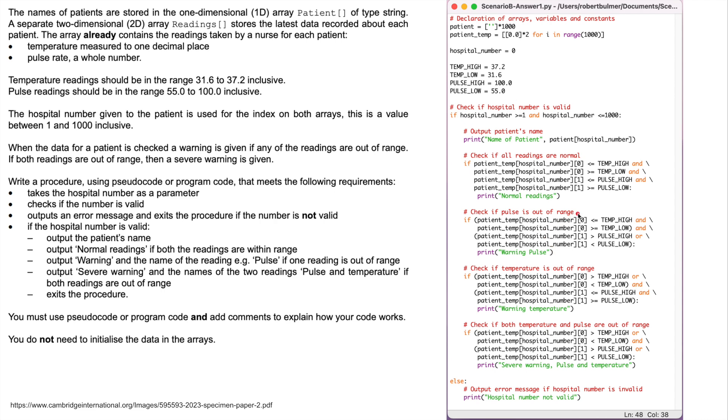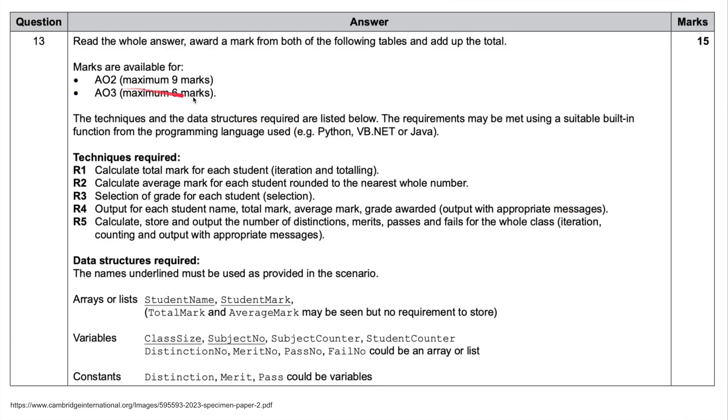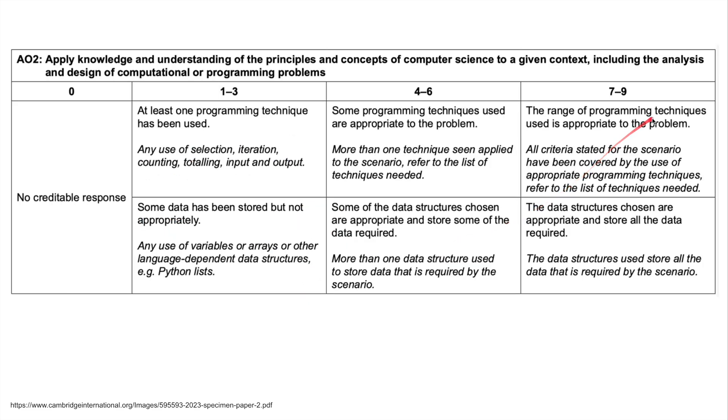Quick look at the mark scheme. AO2 is worth nine marks, AO3 is worth six marks. They're wanting us to use pseudocode or functions from a programming language, e.g. Python, VB, Java. Mentions the arrays, variables and constants we might be using. The range of programming techniques used is appropriate to the problem. All criteria stated for the scenario has been covered by the use of appropriate programming techniques. The data structures chosen are appropriate and store all the data required. Obviously this is not the only way of doing it, there are many different ways of doing it.